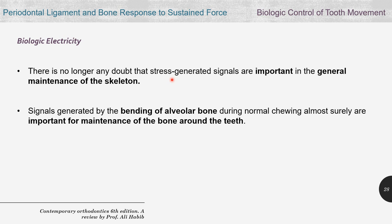There is no longer any doubt that stress-generated signals are important in the general maintenance of the skeleton. That's why astronauts who spend a long time in zero gravity end up with bone problems like osteoporosis. Signals generated by the bending of alveolar bone during normal chewing are also almost surely important for maintenance of the bone around teeth, so if the patient doesn't apply chewing forces, we expect alveolar bone to atrophy, at least theoretically.